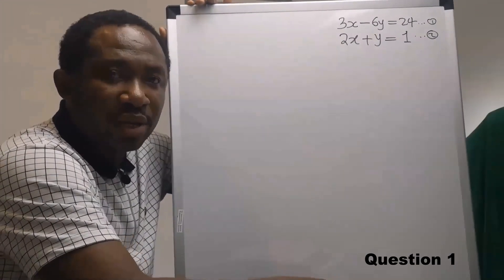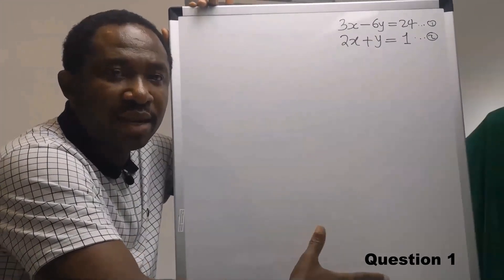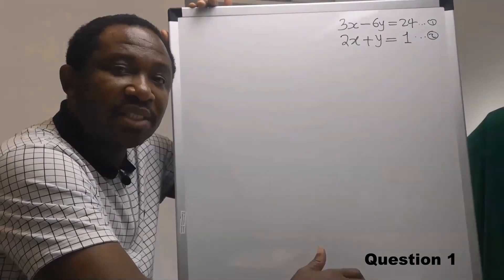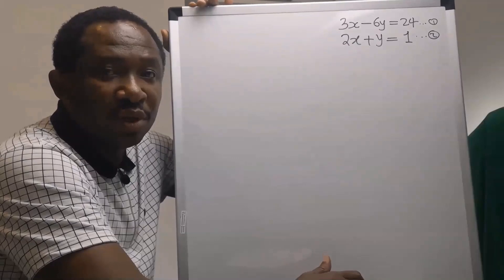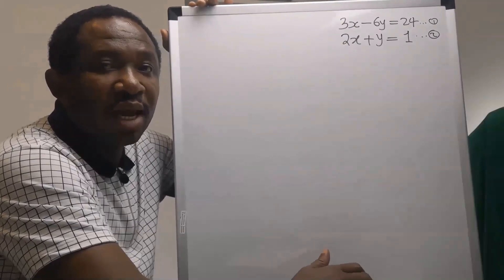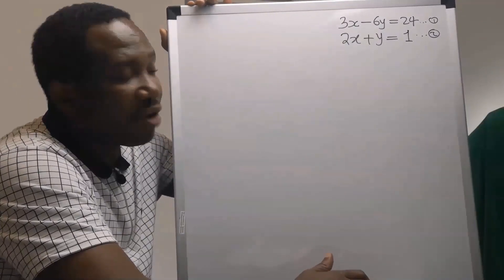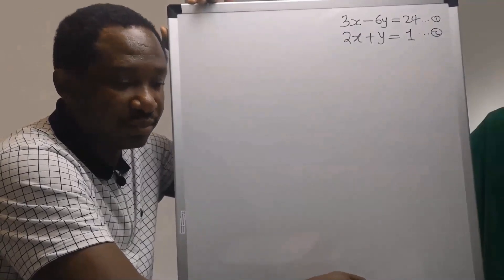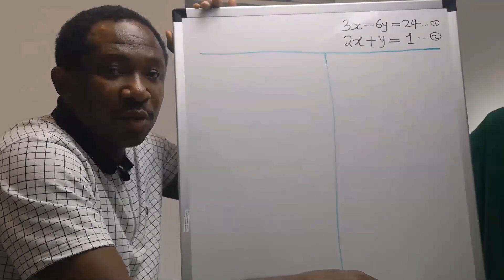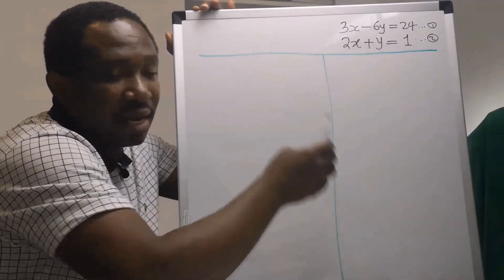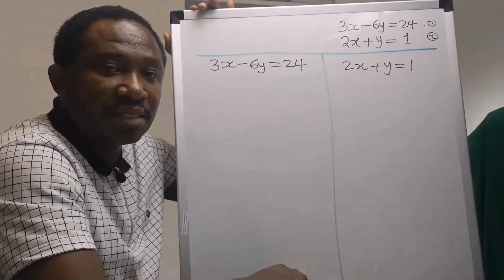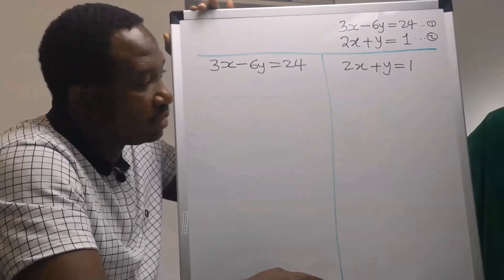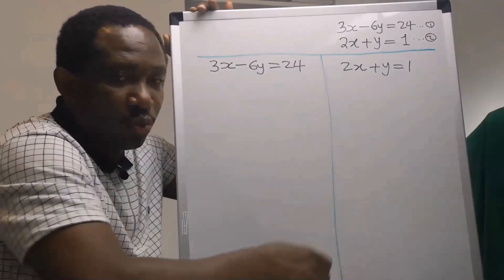Here, we can use elimination method or substitution method. But our aim in this video is to learn how to use graphical method to solve this problem. The first step is to separate equation 1 and equation 2. Next, we are going to make y the subject for both equations.